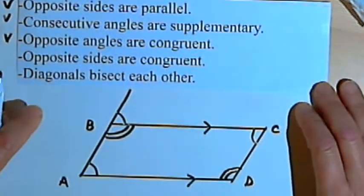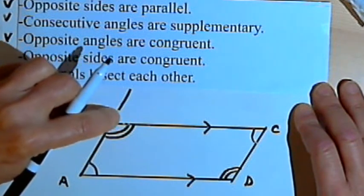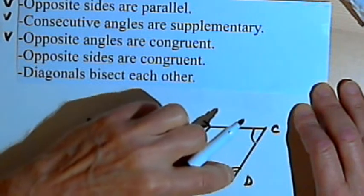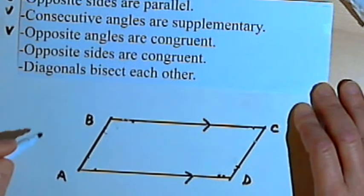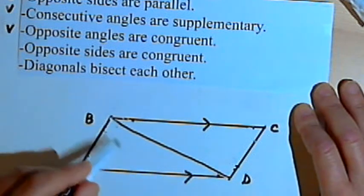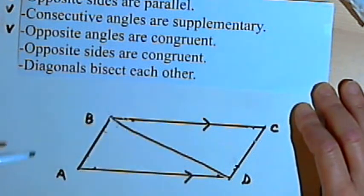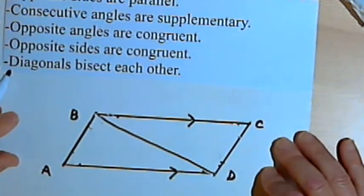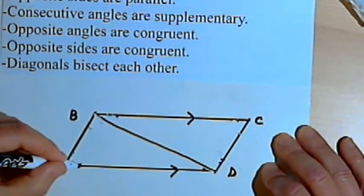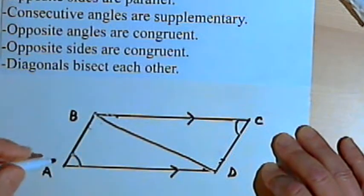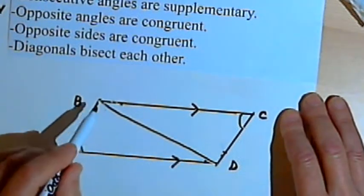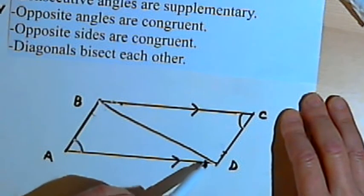The next property says that the opposite sides are congruent. I'm going to draw a diagonal from B to D — it wouldn't matter if you drew from B to D or connected A and C. So now I've made two triangles. I'm going to prove that these two triangles are congruent. I already know that angle A and angle C, which are opposite angles, are congruent.